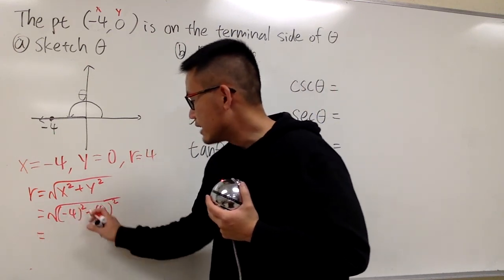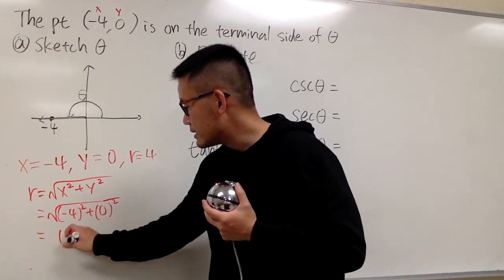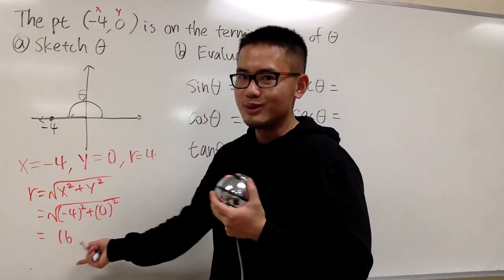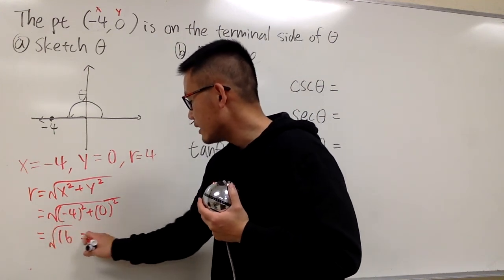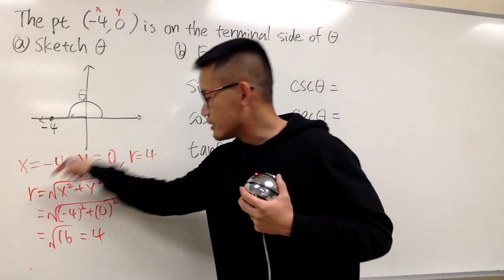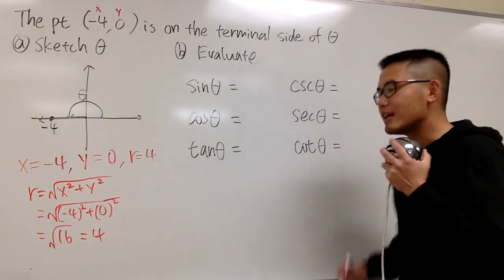And you will see, you do the inside first. -4 squared is positive 16, and you add 0 squared, which is still 0, you have 16 inside. Take the square root of that, you end up with positive 4. r is always positive. Keep that in mind.